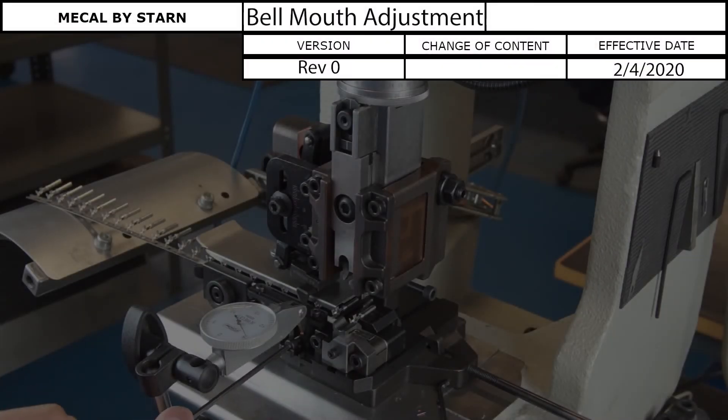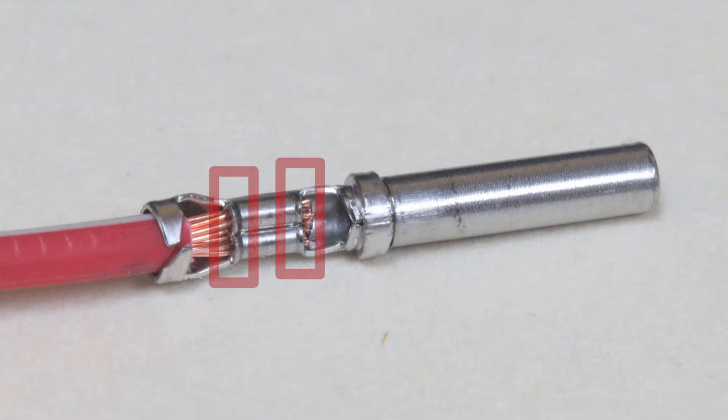In this video, we are going to go over how to adjust the bell mouth of a crimped terminal. The bell mouth is the flared out portion at the front and possibly back of the terminal, shown here.